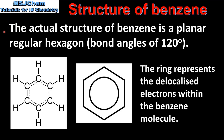The actual structure of benzene is a planar regular hexagon with bond angles of 120 degrees. On the left we can see one way of representing the actual structure, with bond angles of 120 degrees and carbon to carbon bonds of equal length and equal strength. In the center we have a more common representation of benzene, where the ring in the middle represents the delocalized electrons within the benzene molecule.